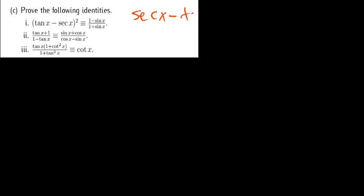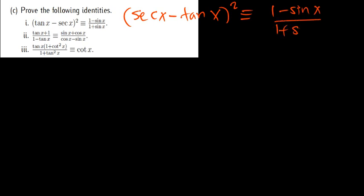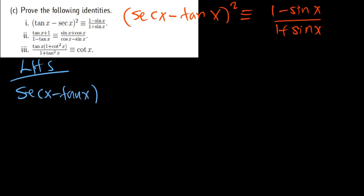So the corrected form is (sec x − tan x), then squared. We want to prove that this is equivalent to (1 − sin x) divided by (1 + sin x). The best thing to do is to start with the left hand side. The left hand side is (sec x − tan x) squared.